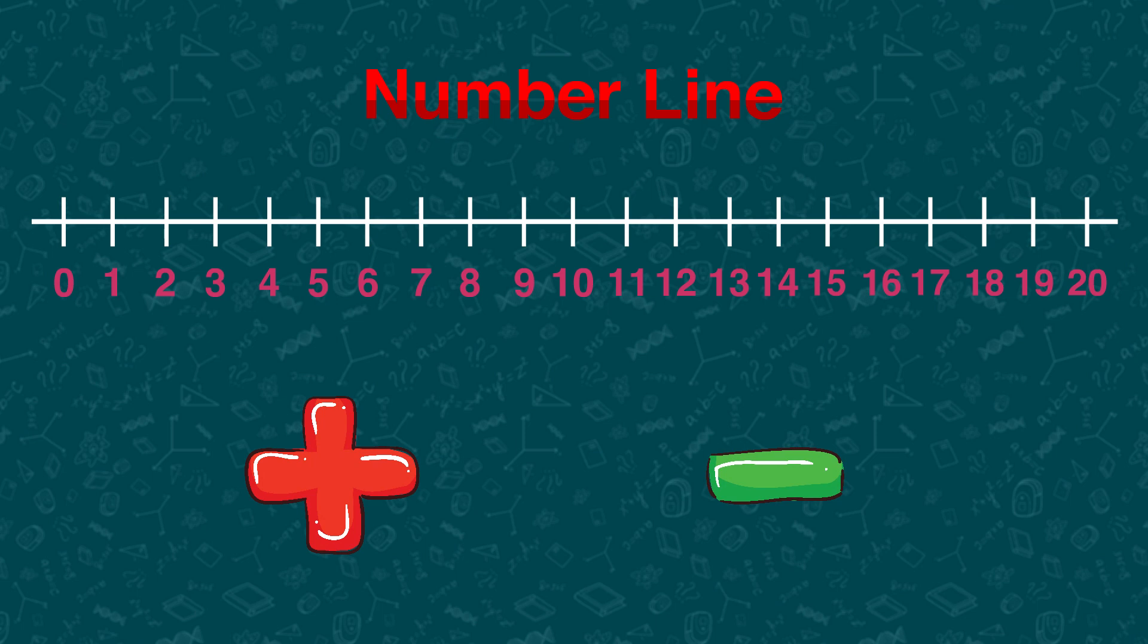Let's use the number line to solve this problem. Seven plus three equals blank. Find seven on the number line.